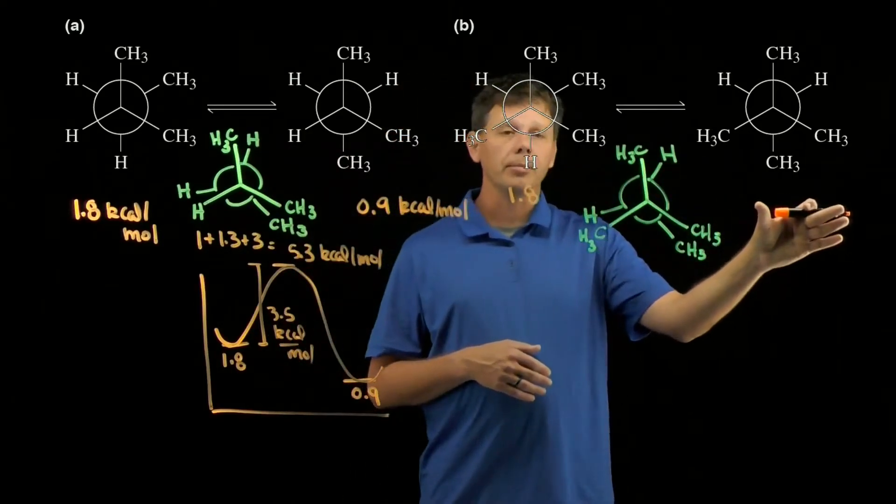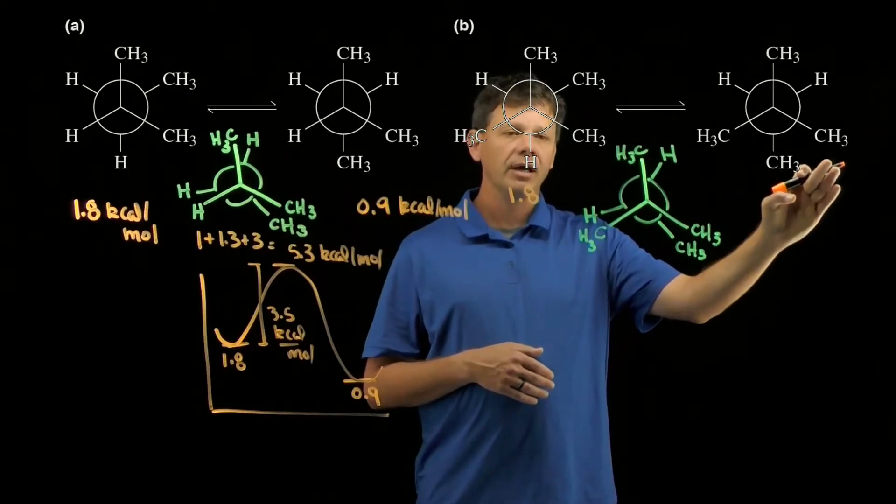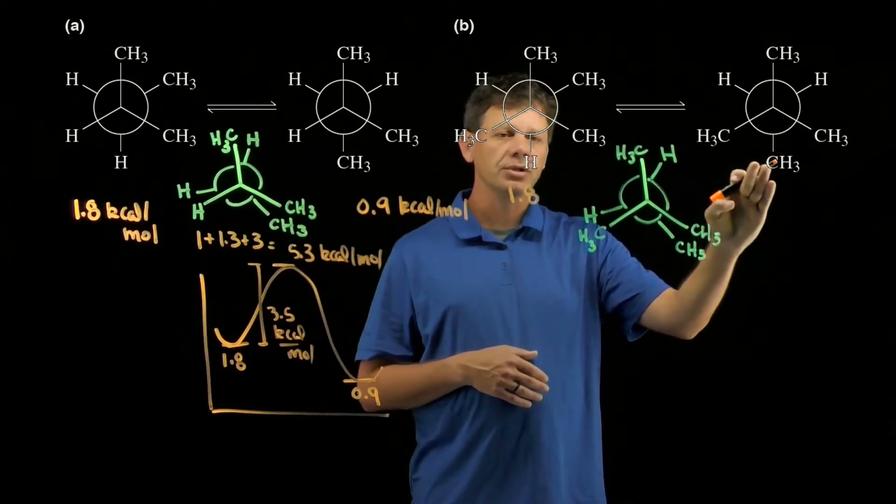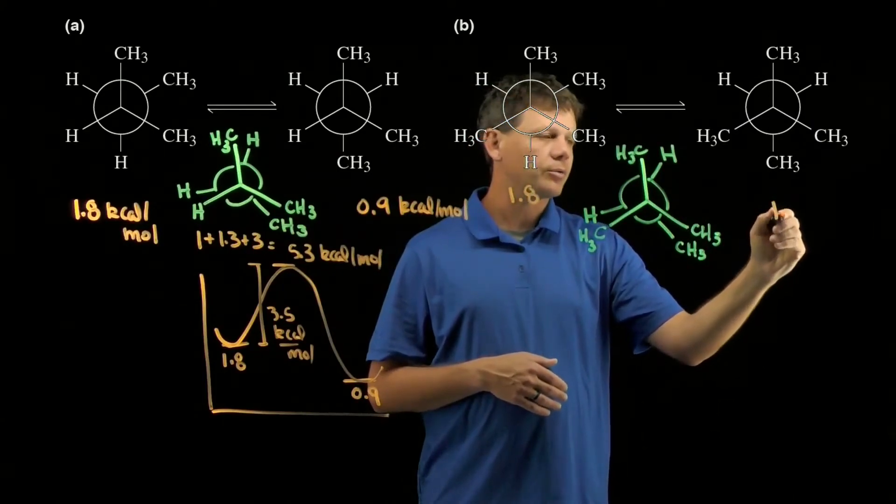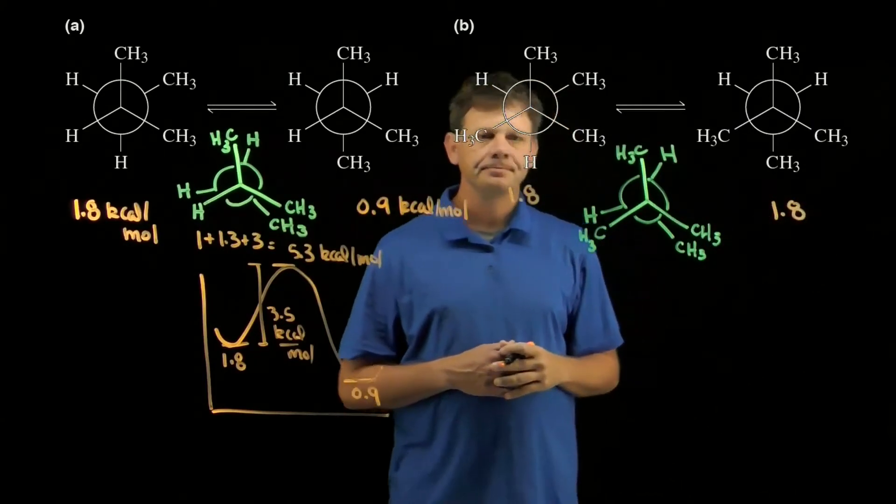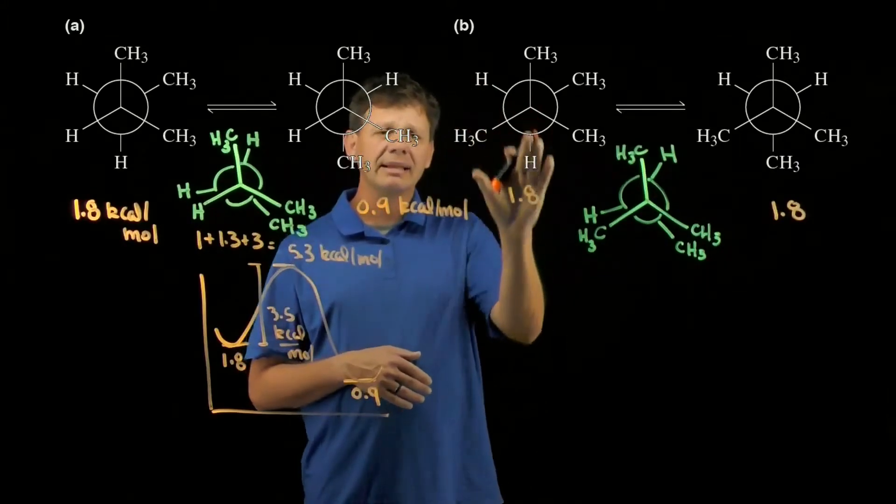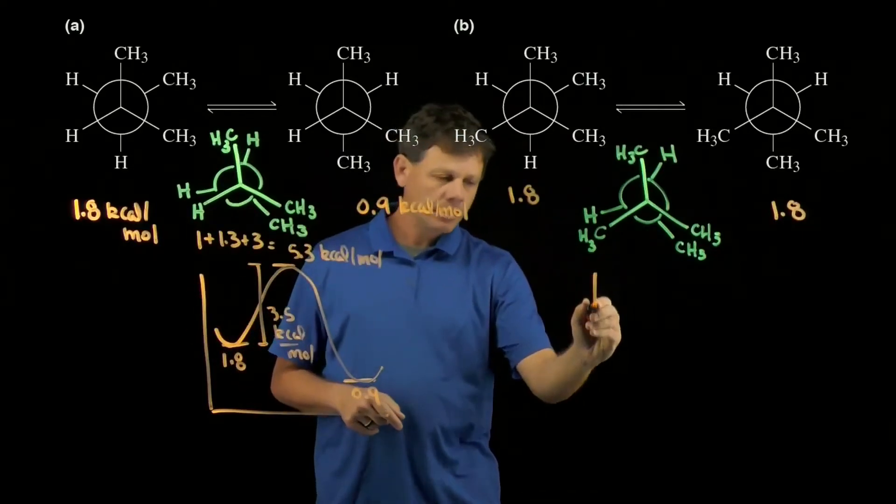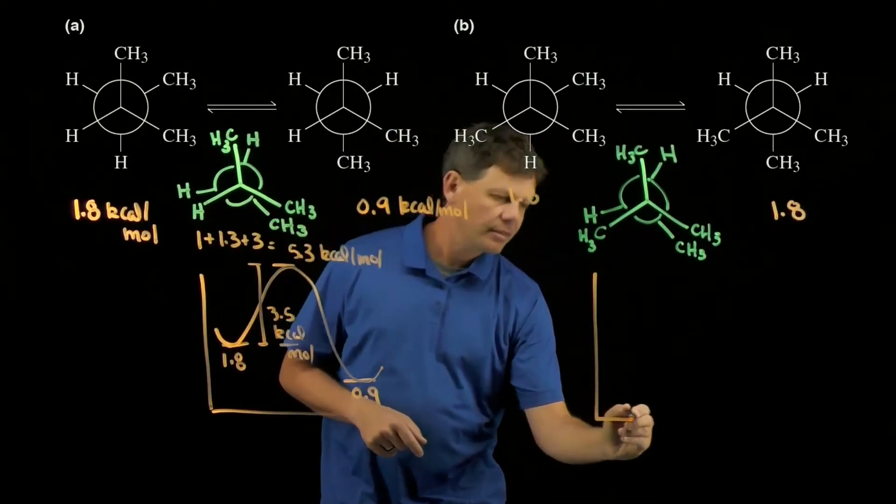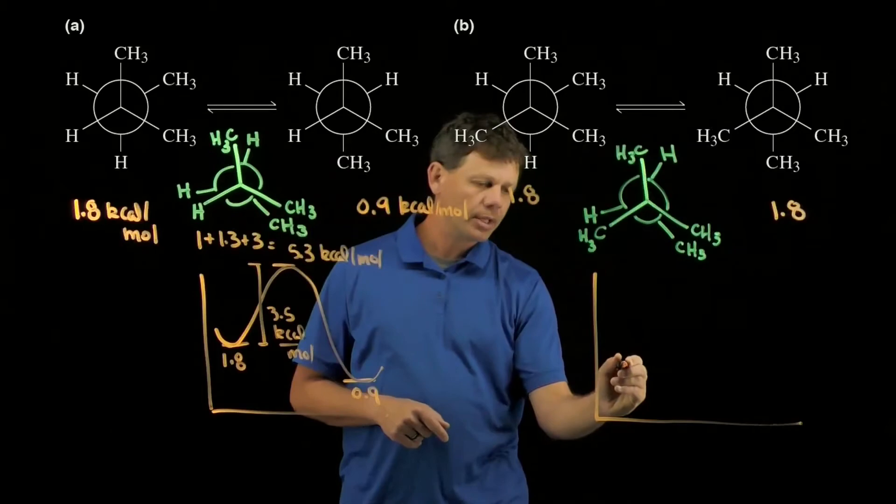Over here on the product side, we have again just two gauche interactions, so a total of 1.8 kilocalories per mole of strain. If the reactant is at 1.8 and the product is at 1.8, our reaction coordinate diagram should illustrate that we start and finish at the same point.